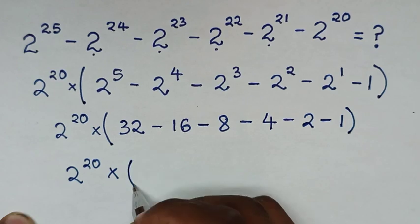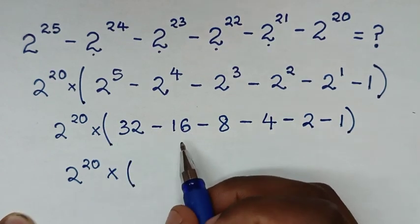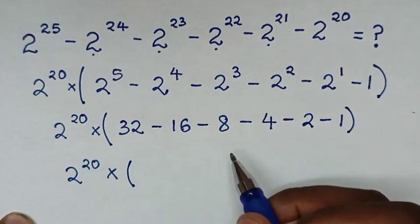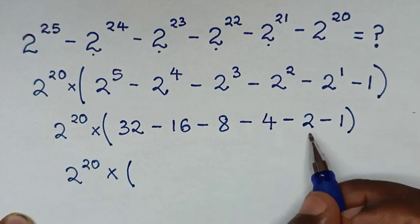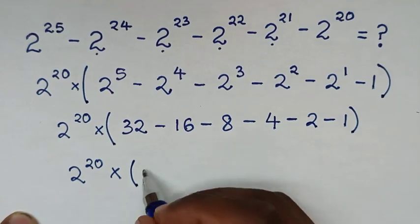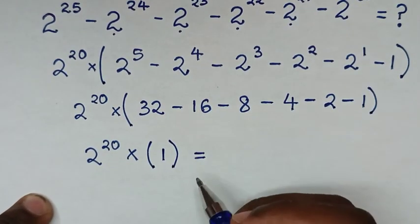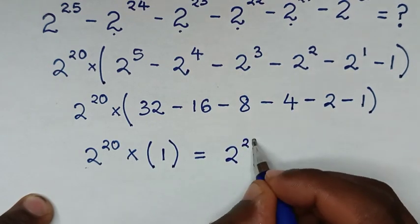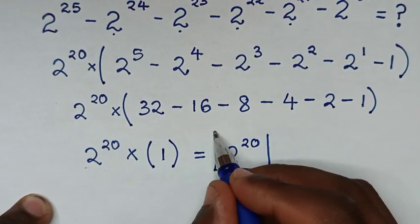Inside the bracket: 32 minus 16 is 16, 16 minus 8 is 8, 8 minus 4 is 4, 4 minus 2 is 2, 2 minus 1 is 1. So the bracket equals 1. Therefore it will be equal to 2 power 20 times 1, which is 2 power 20. This is our final answer.